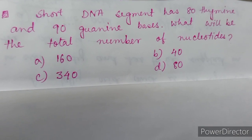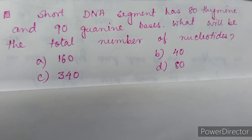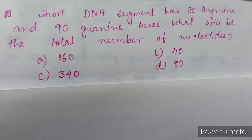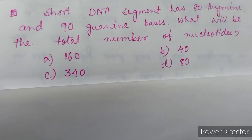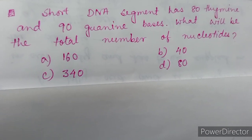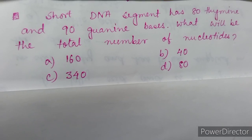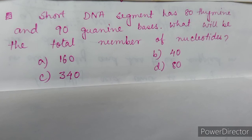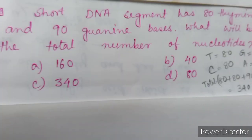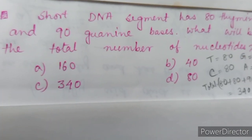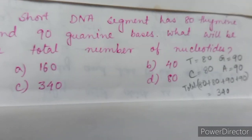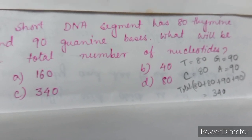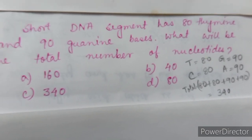Next question: a short DNA segment has 80 thymine and 90 guanine bases. What will be the total number of nucleotides? Option A: 160, option B: 40, option C: 340, option D: 80. The correct answer is option C, that is 340. The number of thymine is 80 and the number of guanine bases is 90.